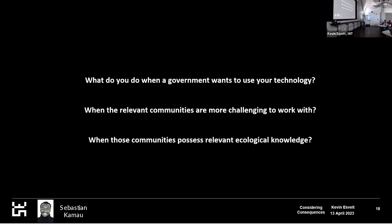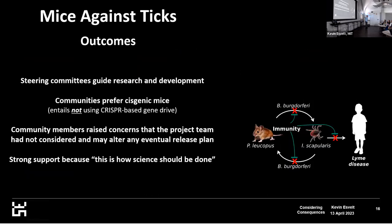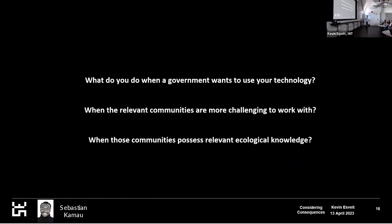That's mice against ticks — now briefly, another story. What do you do when a government wants to use your technology and you're not sure they're going to do it the right way? This came up early because New Zealand, or Aotearoa, really wants to get rid of some of their invasive species. They committed to get rid of their top three mammalian invasives by 2050. There's basically no way they're going to do that without some kind of incredibly advanced technology, such as perhaps gene drive. And note — we are not using gene drive for mice against ticks. We don't need to; they're islands, introduce enough mice and resistance will get up to a high enough level.